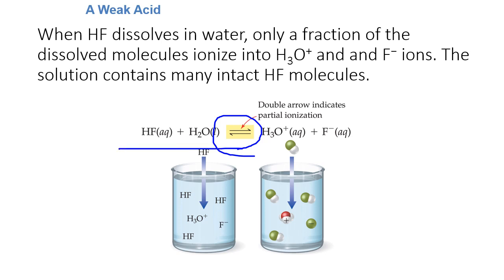We show that with a double arrow. If you see an acid reaction listed with double arrows, that means it's going back and forth because you still have some intact HF molecules floating around, and some separated hydrogens and fluoride ions.